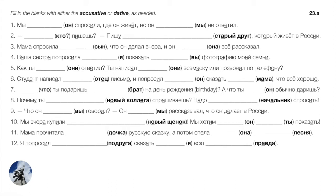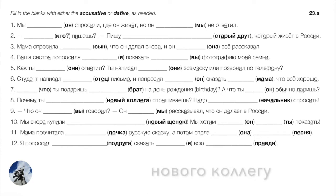Follow-up: what do you usually give to him? Sticking with the dative: Что ты ему обычно даришь? Number eight: why are you asking your new colleague this question? An asking verb takes a direct object in the accusative. Take careful note of the tricky form нового коллегу.